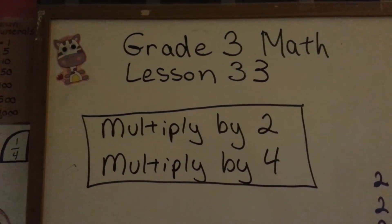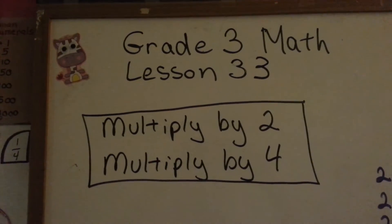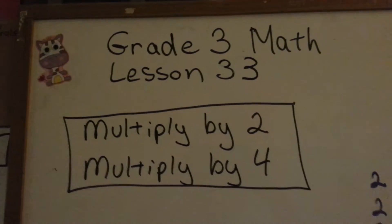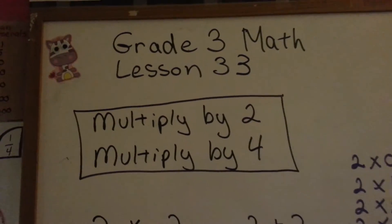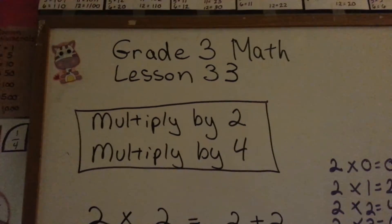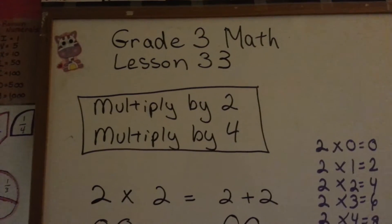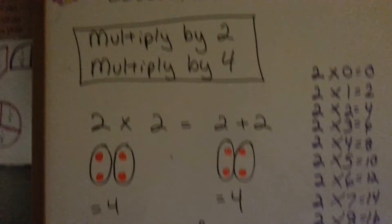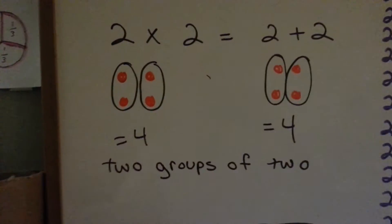Grade 3 math, lesson 33: multiply by 2 and multiply by 4. We've done multiplying by 1 and 0. I'm going to show you multiplying by 2 and by 4 now. So the first thing we're going to do is look at multiply by 2.